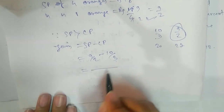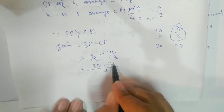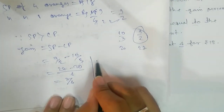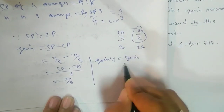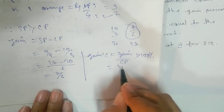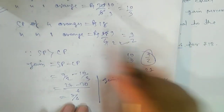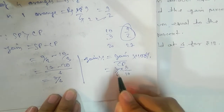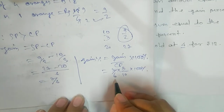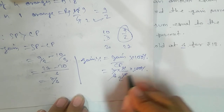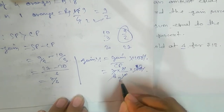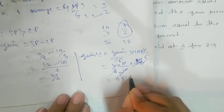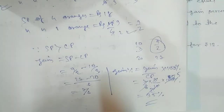Gain = SP − CP = 9/2 − 10/3 = 27/6 − 20/6 = 7/6. Gain% = (Gain / CP) × 100% = (7/6) ÷ (10/3) × 100% = (7/6) × (3/10) × 100% = 35%. So the gain is 35%. I hope you enjoyed the class. Thank you.